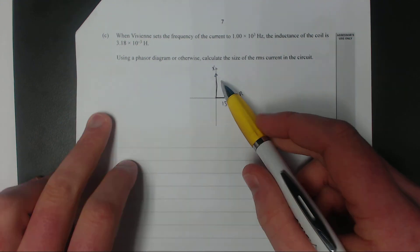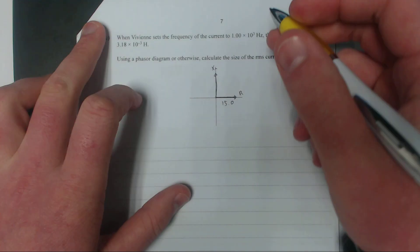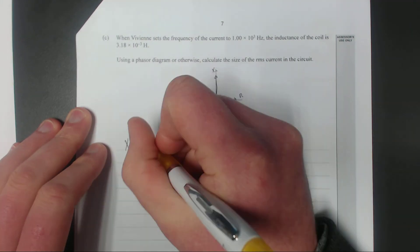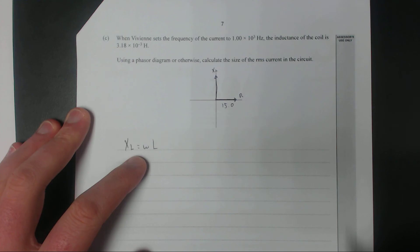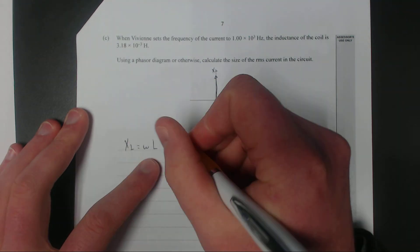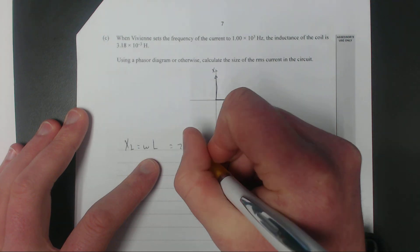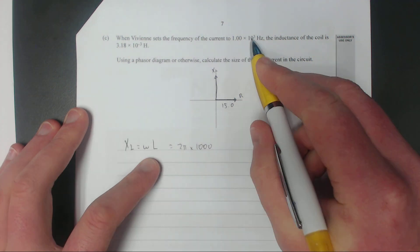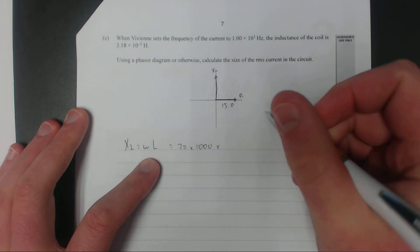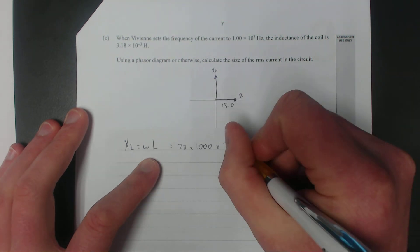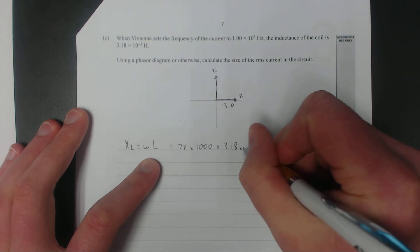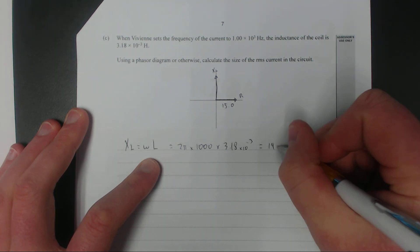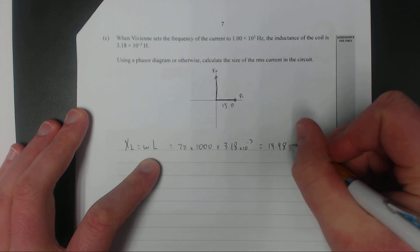So XL equals omega L, which equals 2π times the frequency, 1000 hertz or 1 times 10 to the 3, times the inductance 3.18 times 10 to the negative 3 henry. That equals 19.98, or let's make that 20 ohms. So now we can put 20 ohms up there.